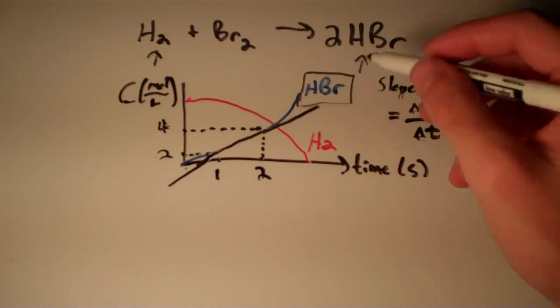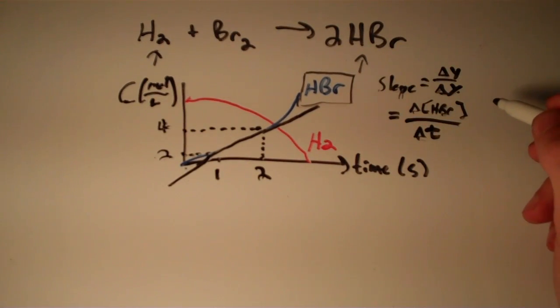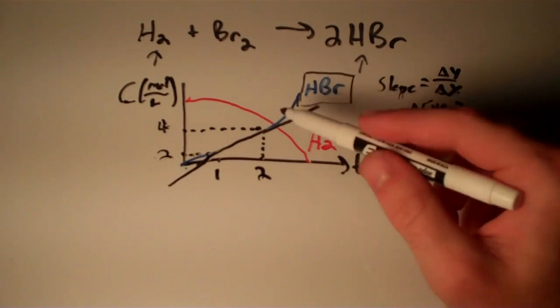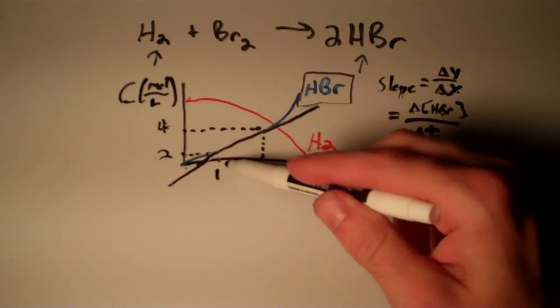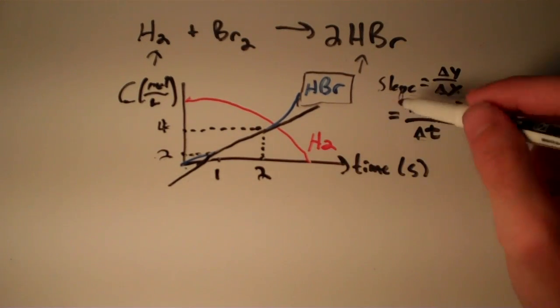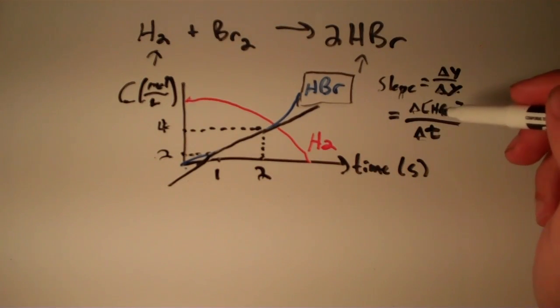Notice as you reduce the interval between these two points, as your time interval becomes lower and lower, you get a more accurate result as to the rate of your reaction at any specific instant. So we've just found the rate of formation of HBr—we've found an expression for the rate of formation of HBr.